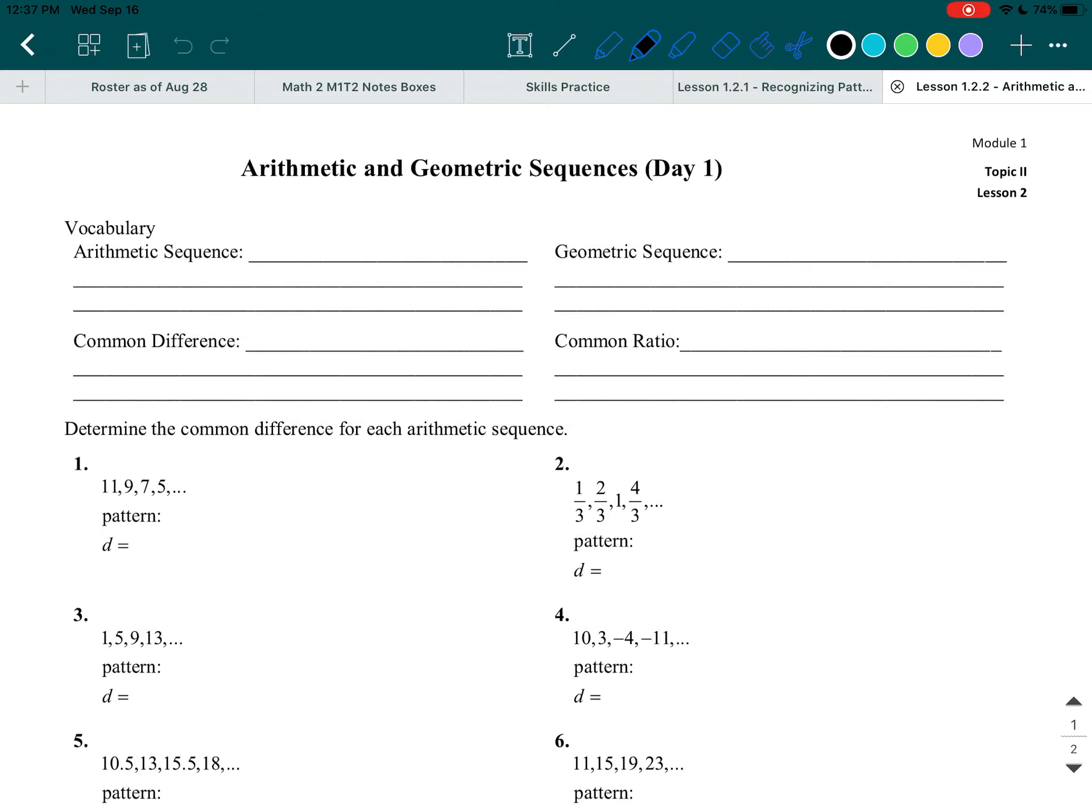Let's start off with some vocabulary. So the first vocabulary word is Arithmetic Sequence, and I'm going to write the definition of it. As I write the definition, I want you to write it down as well, and don't forget to think about what the meaning actually is, as opposed to just writing it without thinking. If you just write it without thinking, it's not helping you in the long run.